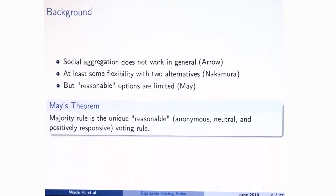These assumptions are: neutrality means we don't really care about the names of the candidates. Positive responsiveness means that if we're in a tie situation and somebody expresses a little more preference for one of the alternatives, then the outcome should change in that direction. And anonymity says that everybody plays the same role in the voting rule — we can rearrange people however we want and nobody's special.